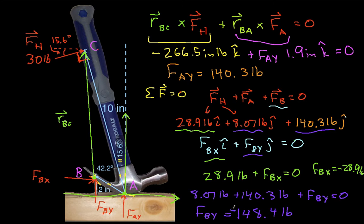Okay, so what this tells us is that in actuality, this nail is applying a force to the hammer that's going downwards, and it's 148.4 pounds, which means that the hammer is applying a force upward of the same magnitude to the nail, and the nail is also applying a force to the left.